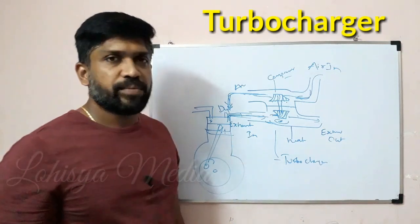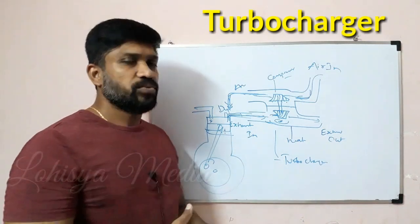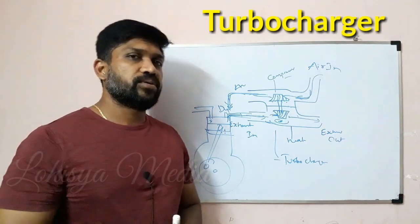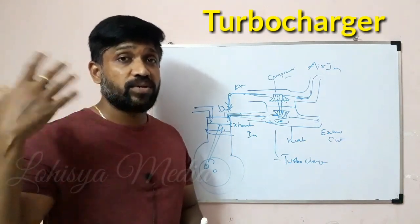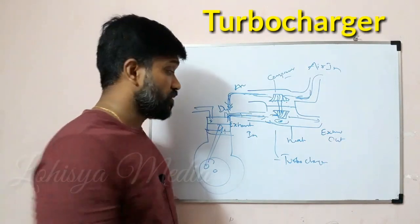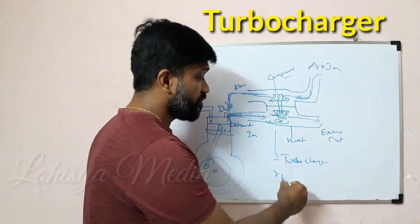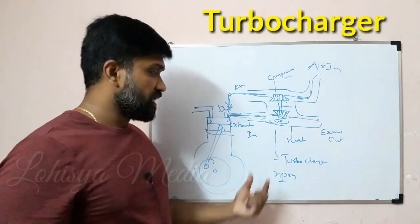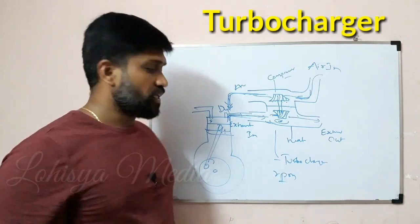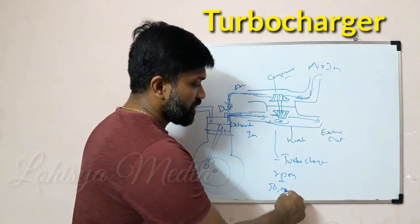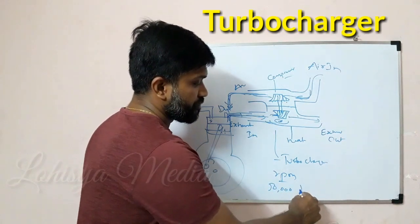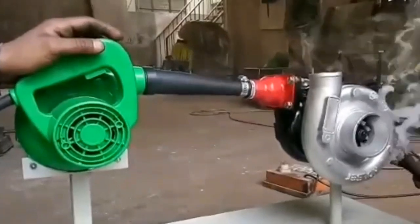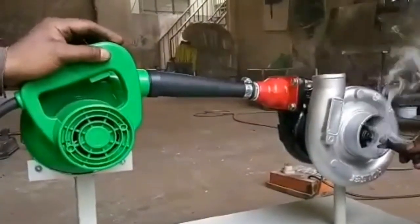This is the RPM. The price of the DG and this is the RPM — this is 1,20,000 RPM. RPM is per minute. If your engine is at 1 lakh RPM, it is 1 lakh. It is the price.